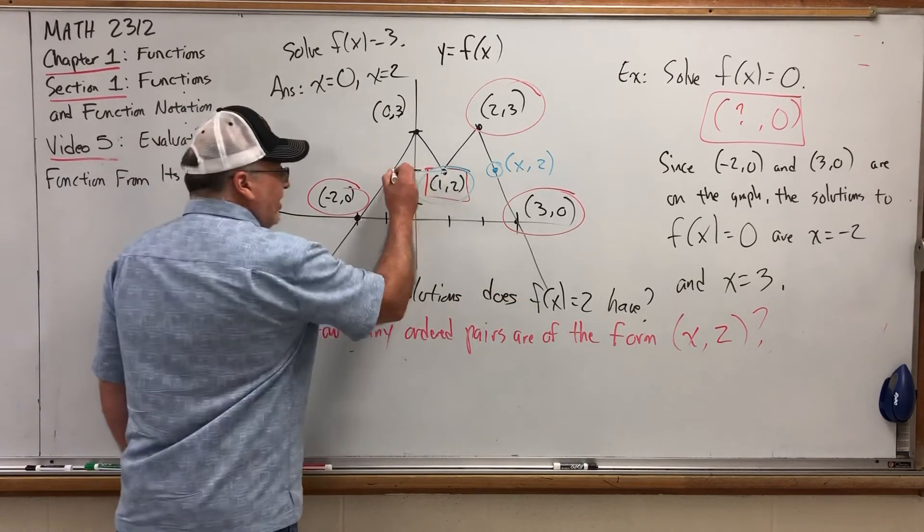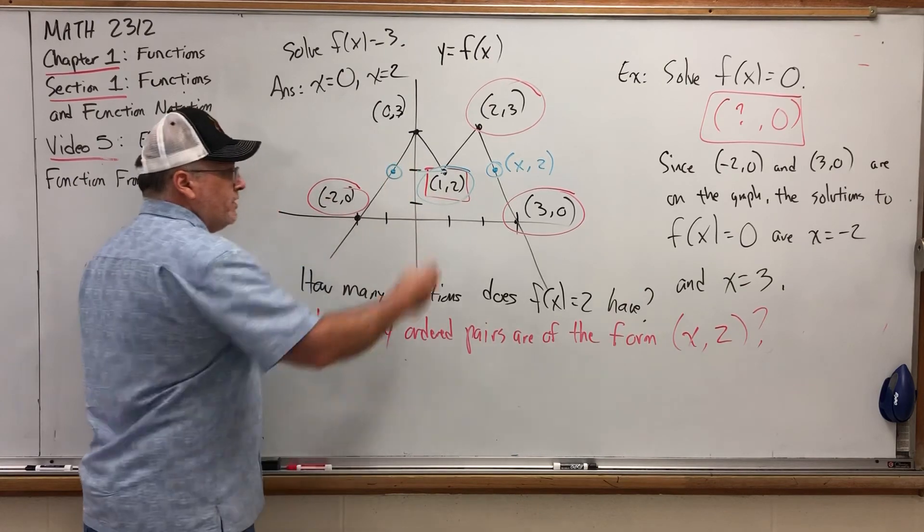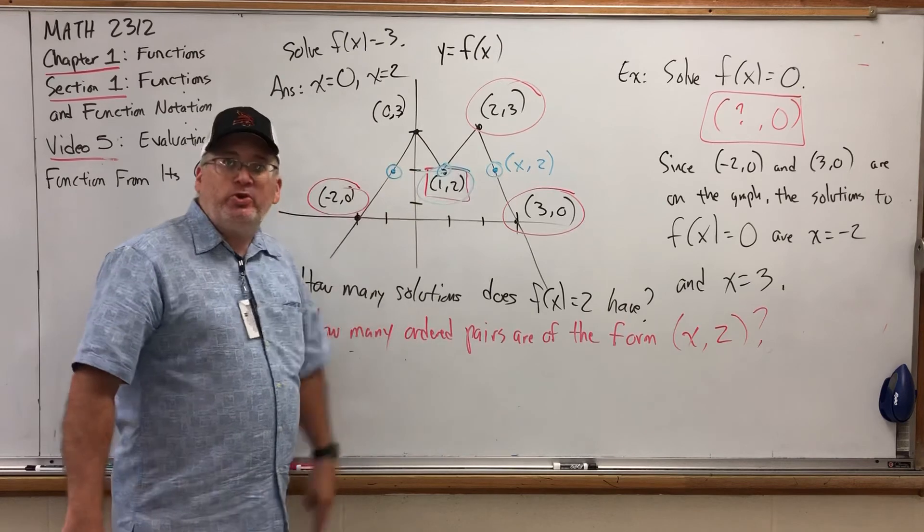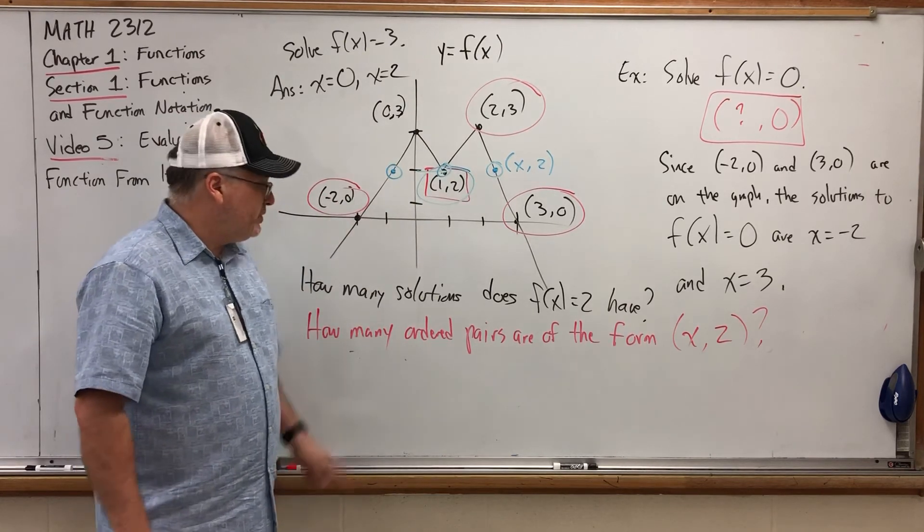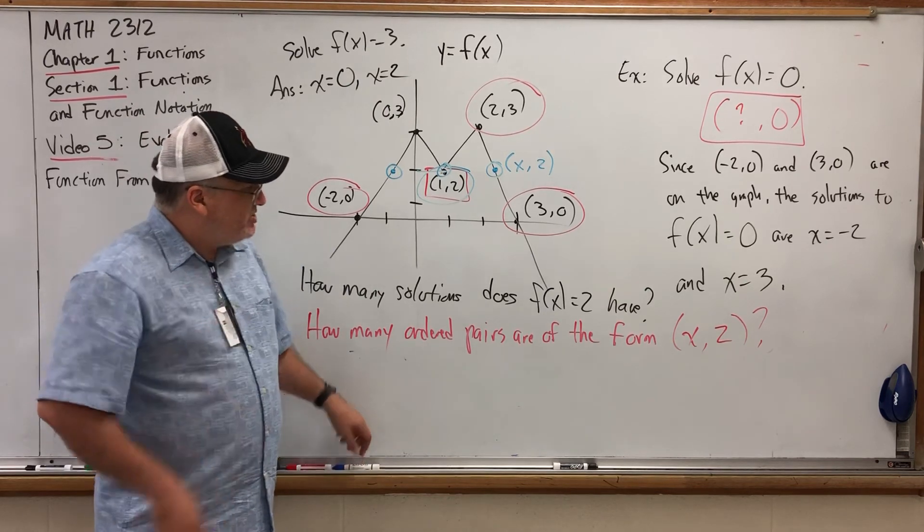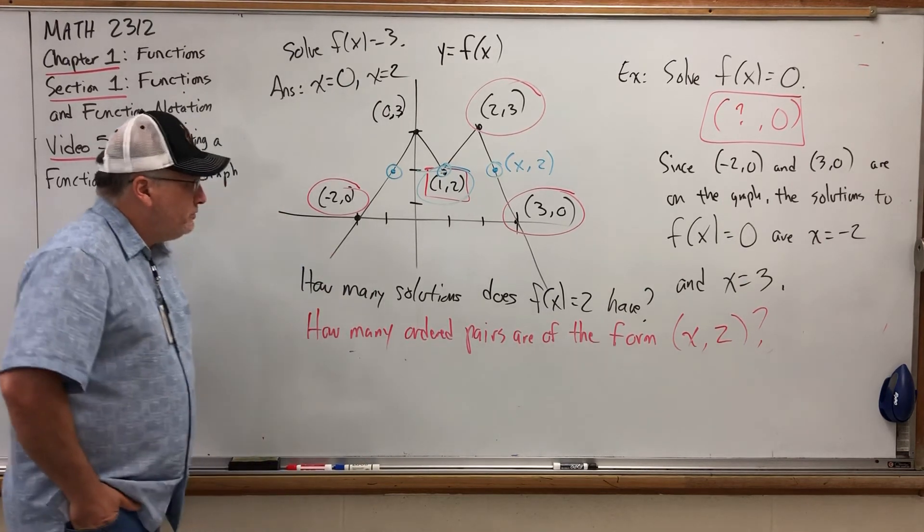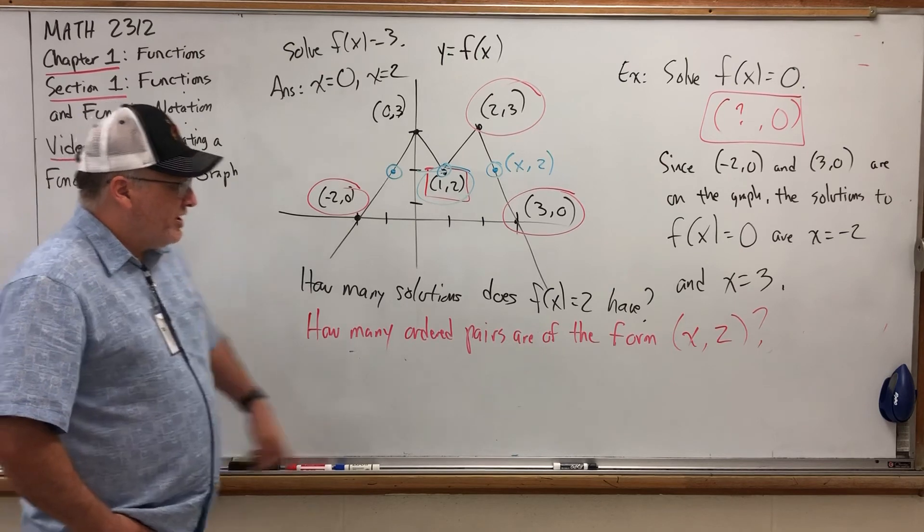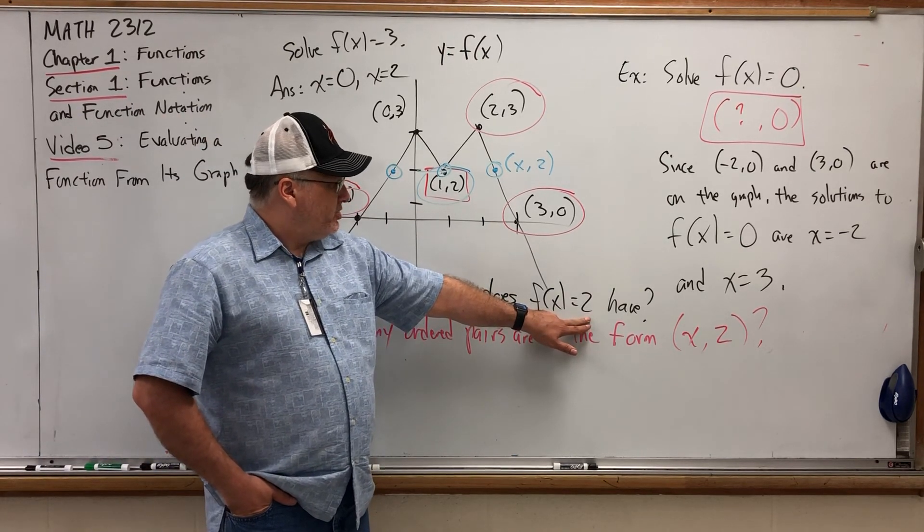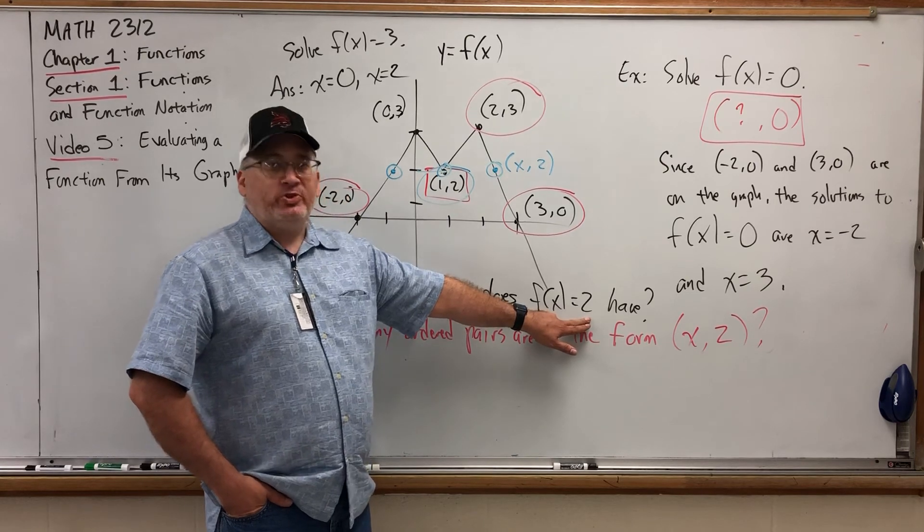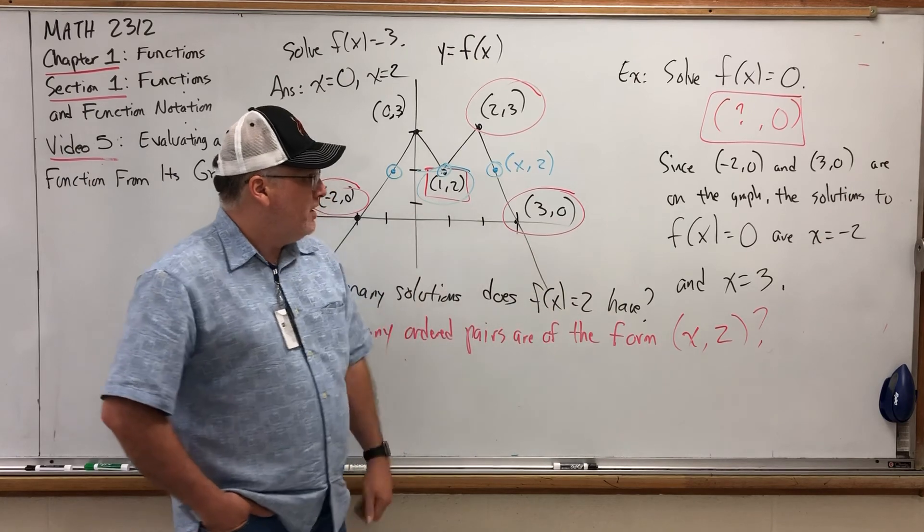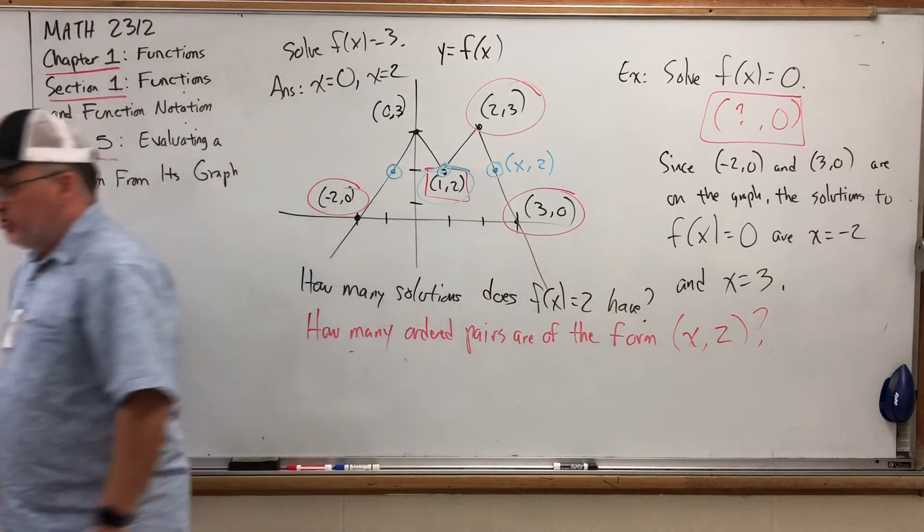So there's actually 3 points on this graph where the output is 2, 3 different points, which means there's 3 solutions to the equation f of x equals 2. Just a challenging thought for you to think about. There are actually values I could put here, instead of 2, where the equation would have 4 solutions. I challenge you to think about an output on this graph that would actually have 4 solutions for the input.